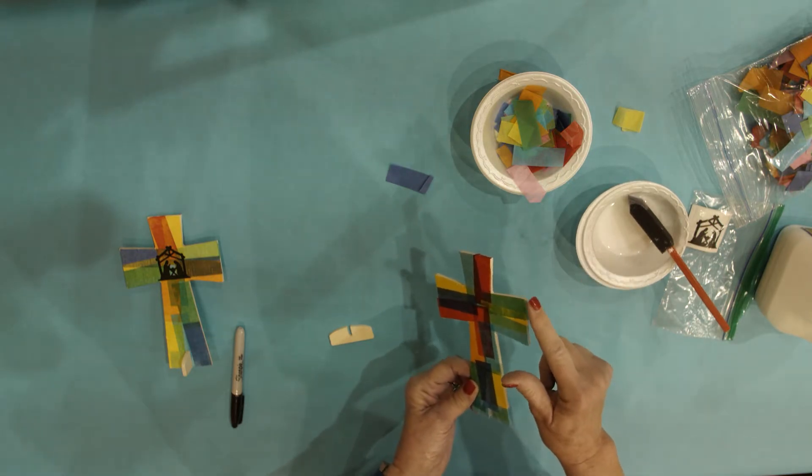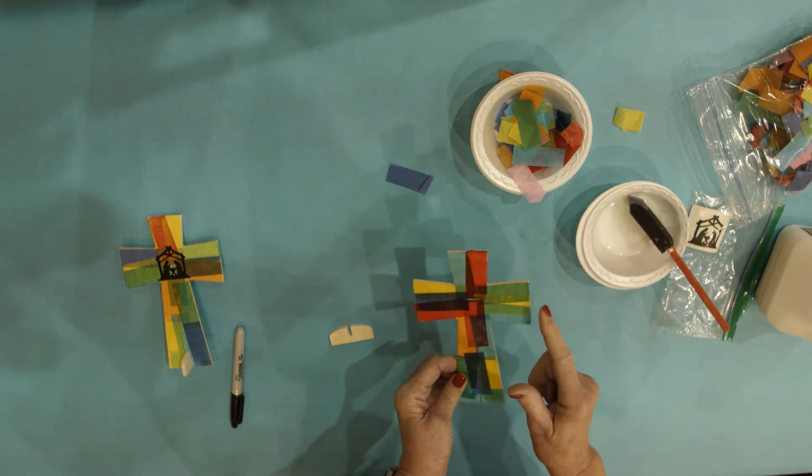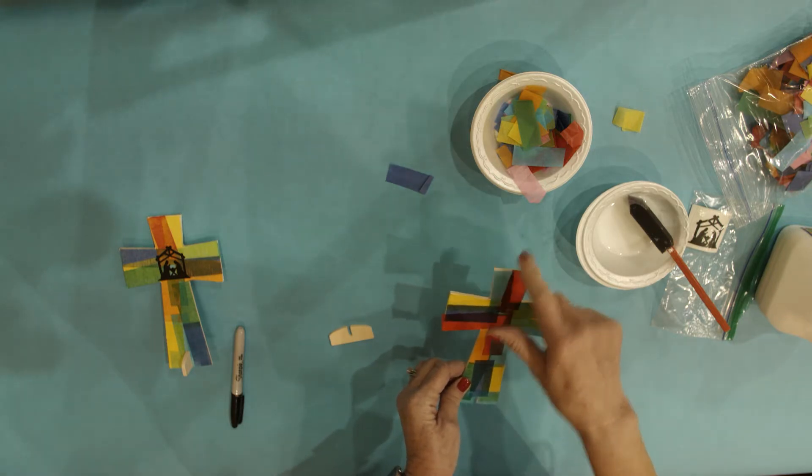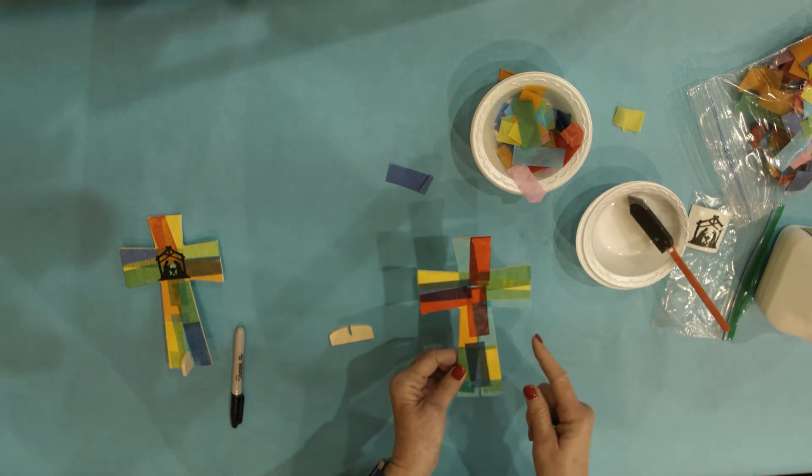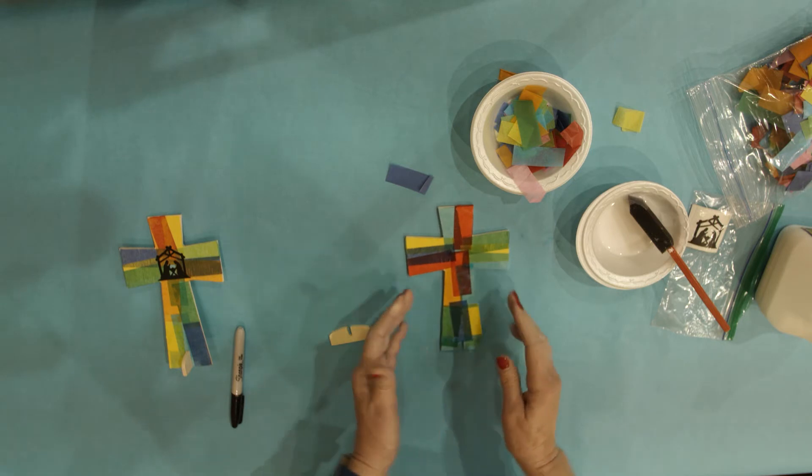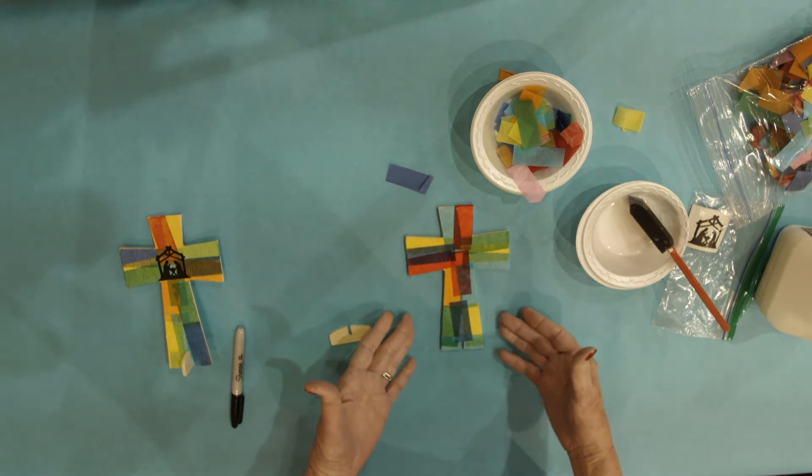If they have areas where the tissue paper is sticking up, if you just touch a little glue to that, it will stick to the sides. And that is the completion of the stained glass look.